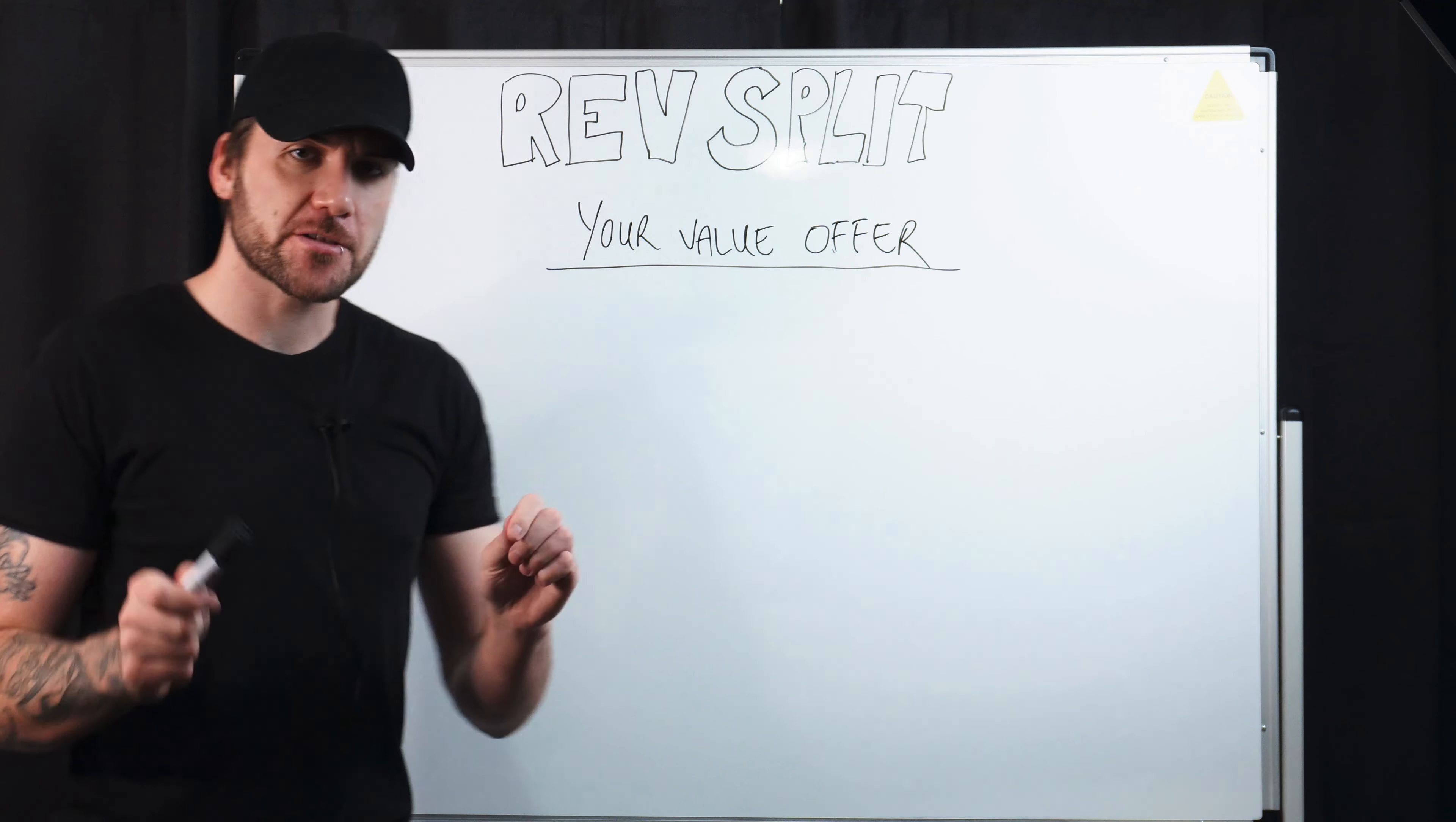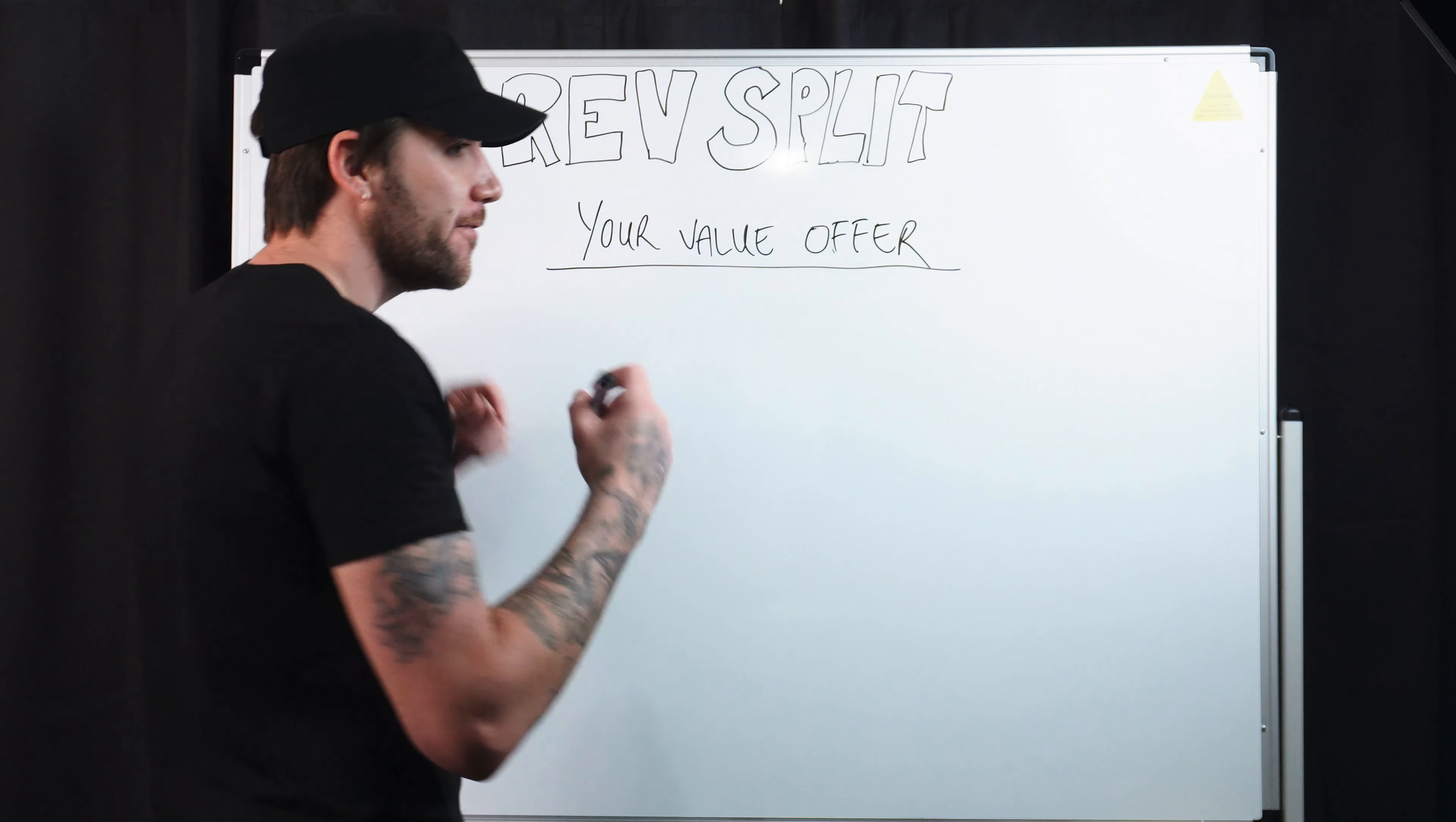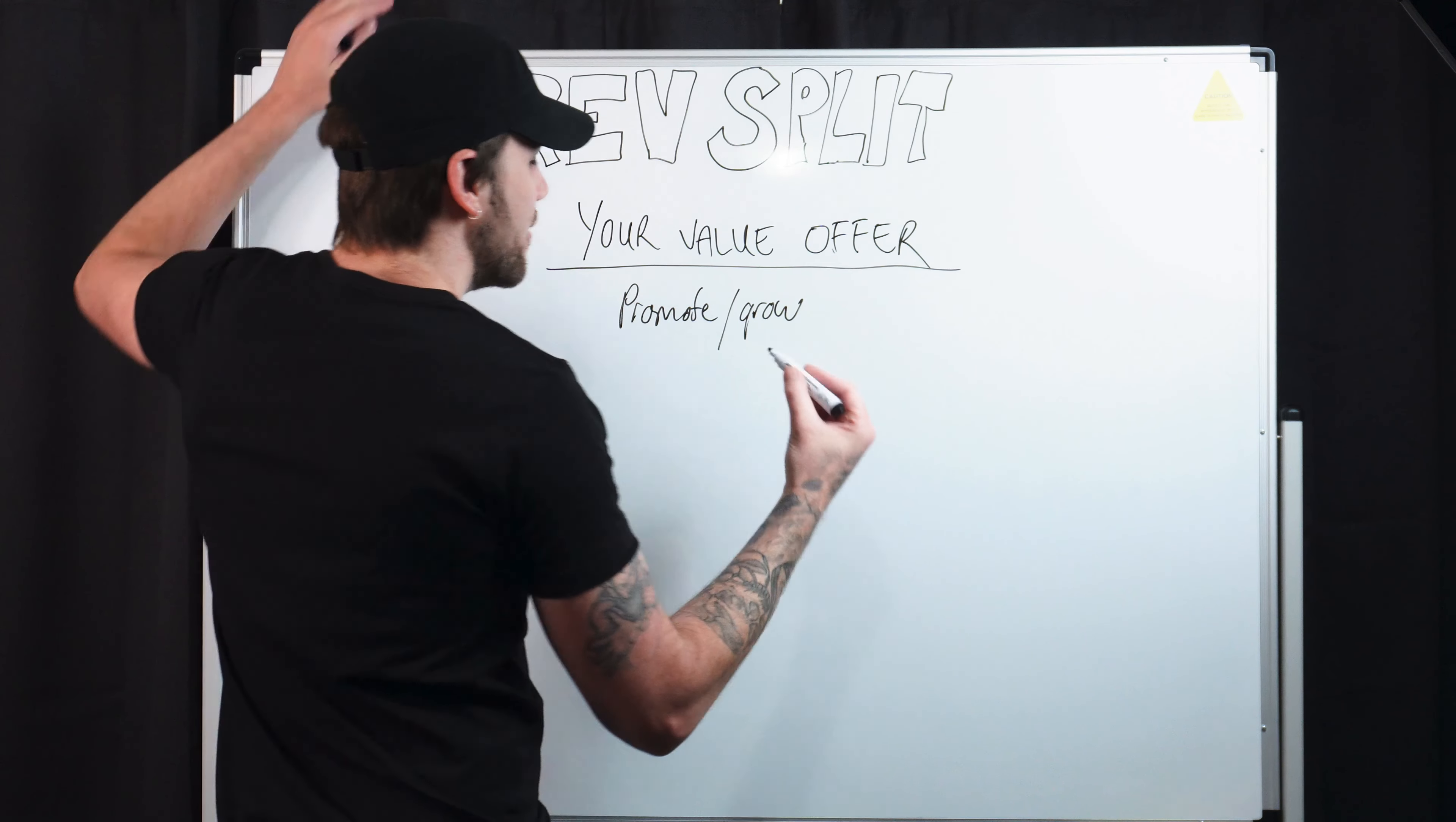Alright, so to put things in perspective first we must go over what you're actually offering and then this will give you perspective as to why you are justifying the revenue split that you're proposing and these are also the reasons that you can give to the model if she pushes back. So first thing you're offering to promote and grow her account. Now I know I'm speaking the obvious here but I really am giving you perspective so when the model pushes back because she probably will you can remember these things and you can tell them to her.